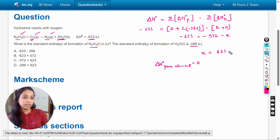623 minus 572. So according to our calculation, the answer will be -572 plus 623, so the answer will be C option.